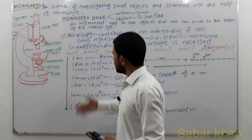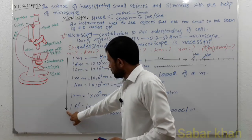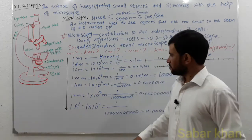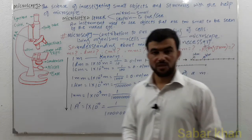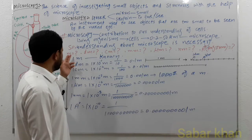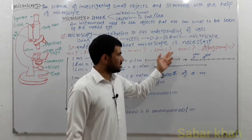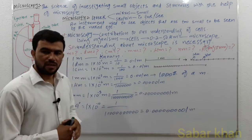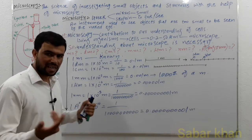When we come from the top to the bottom, the value decreases. Now I hope you can easily understand meter, decimeter, centimeter, millimeter, micrometer, nanometer, and angstrom — which one is the smallest and which one is the largest.